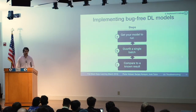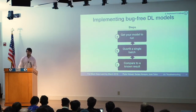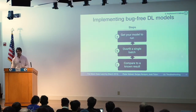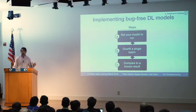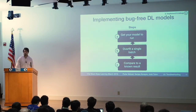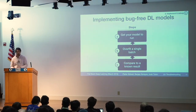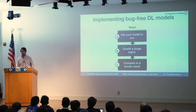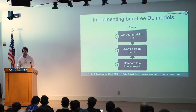This is super critical because it actually catches a ton of bugs. You'd be shocked how many times I've implemented a model and it's not working, and then I finally go back and overfit a single batch and realize that I can't do it. That will very much narrow down the space of possible bugs. And then once you can overfit a single batch, the next thing to do is try to find some known result that you can compare to — that's the last step in making you confident that your model is working the way it should be.